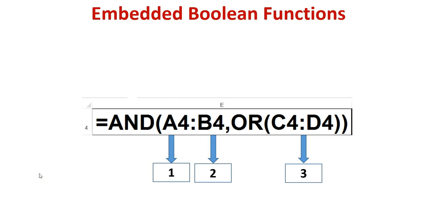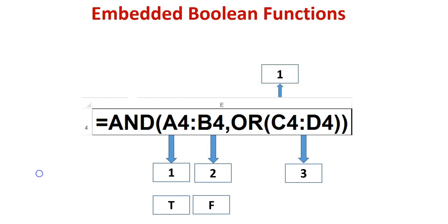Let's dissect this OR function. This OR function has three arguments. The first argument, A4, contains the value true. The second argument, B4, contains the value false. The third argument is an AND function.